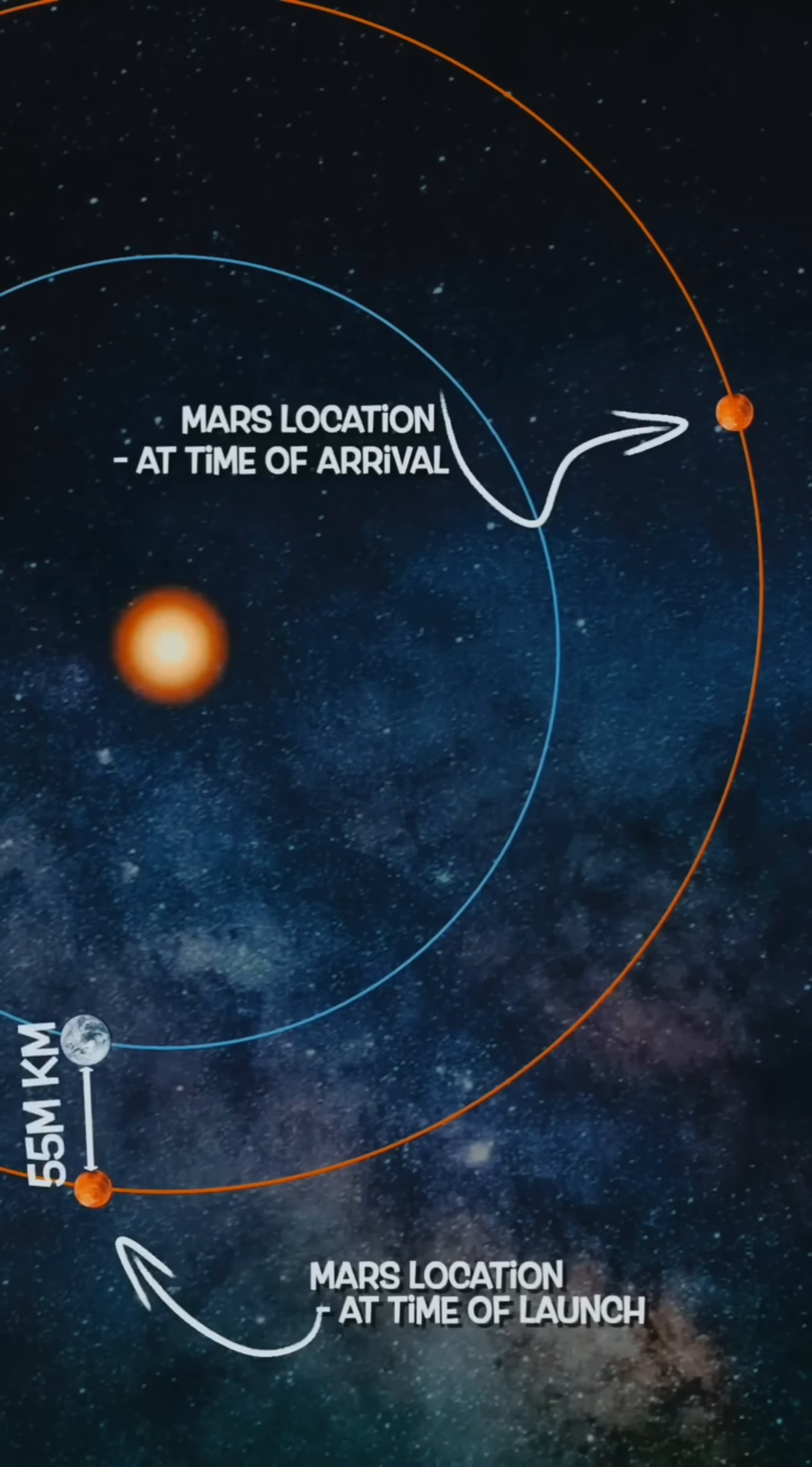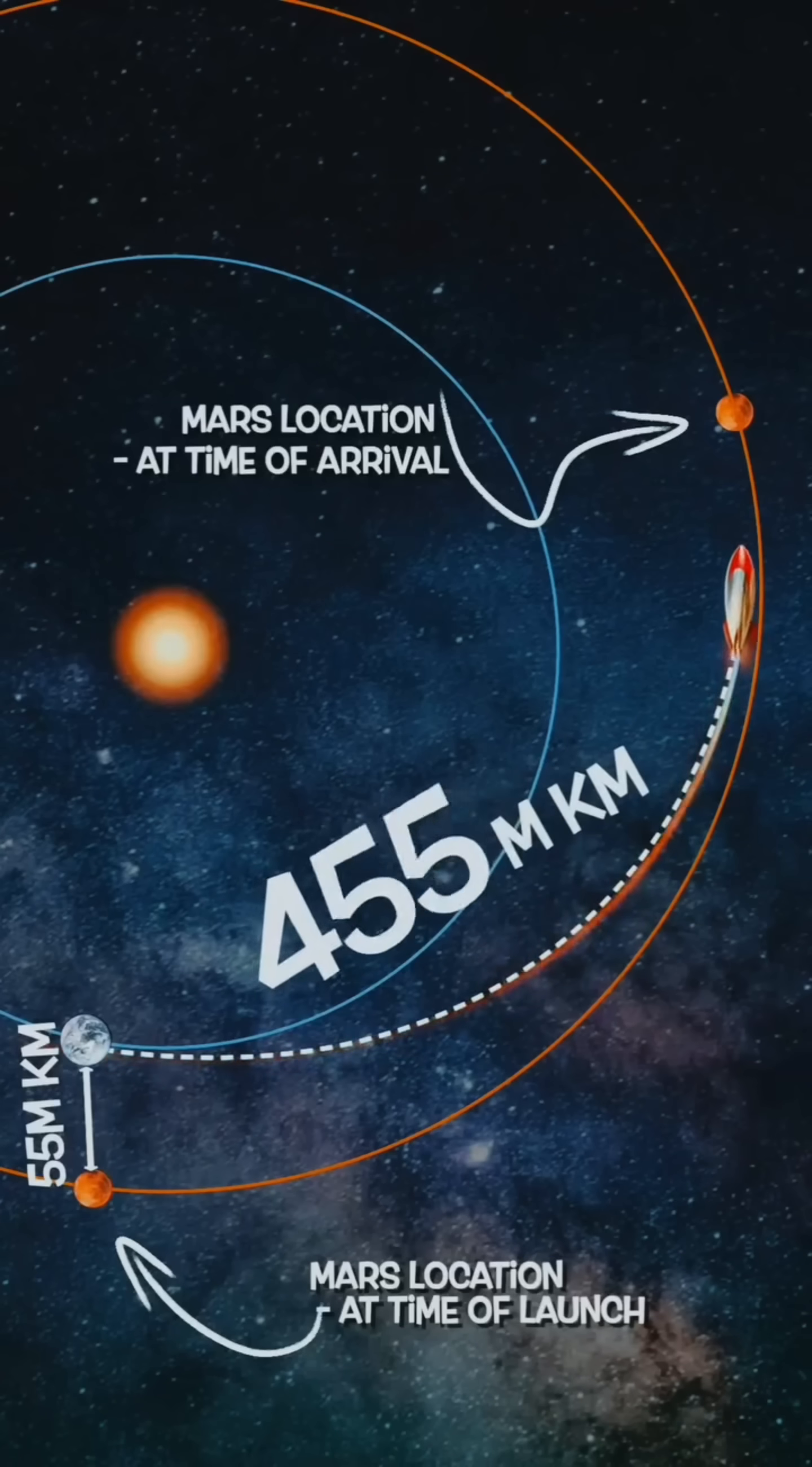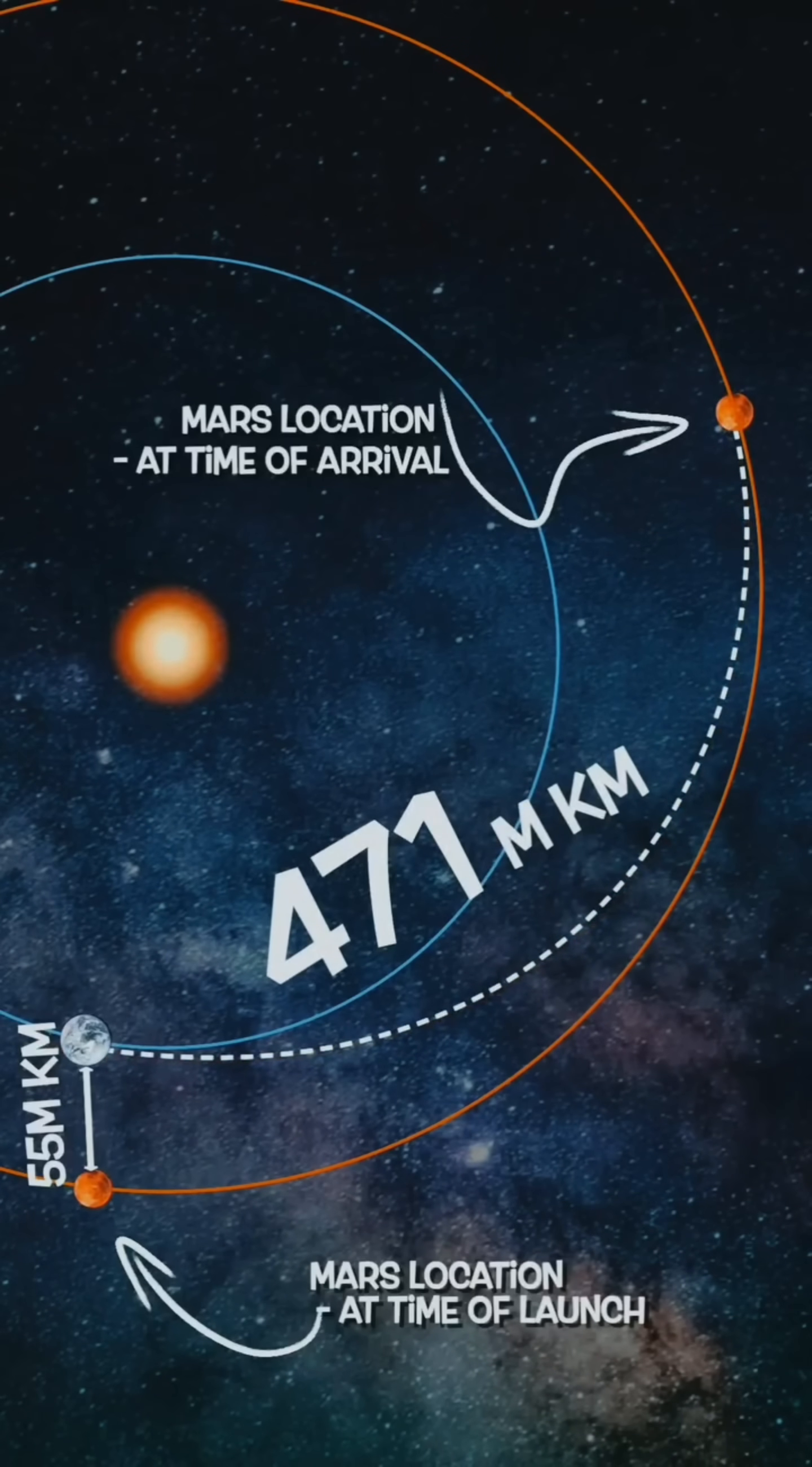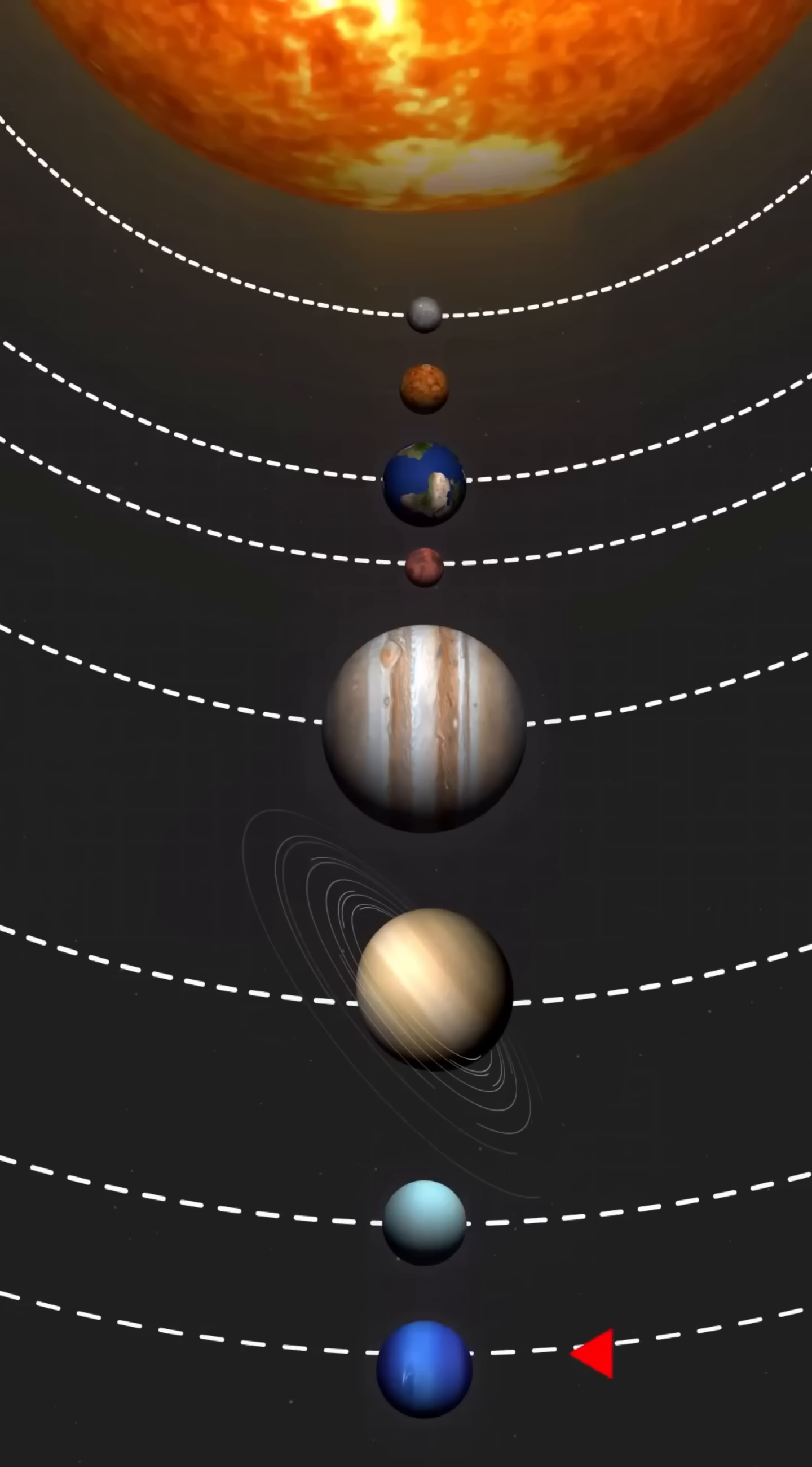As a result, a spacecraft launched when Mars is at a distance of 55 million kilometers from Earth would have to travel 470 million kilometers to get to the right planet. This, in turn, would last about seven months.